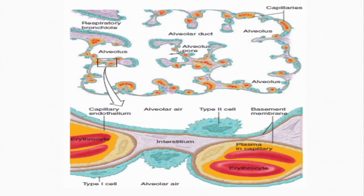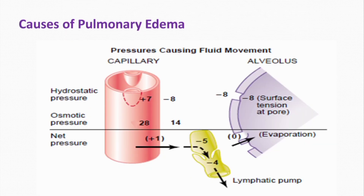In pulmonary edema, the interstitial fluid hydrostatic pressure, which is normally minus 8 mmHg, becomes positive. This positive pressure causes rupture of the alveolar epithelial walls, so fluid accumulates in the alveoli.